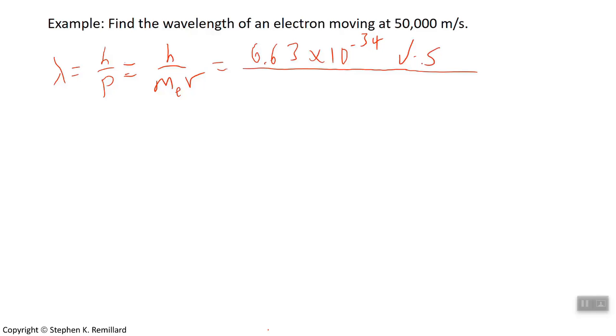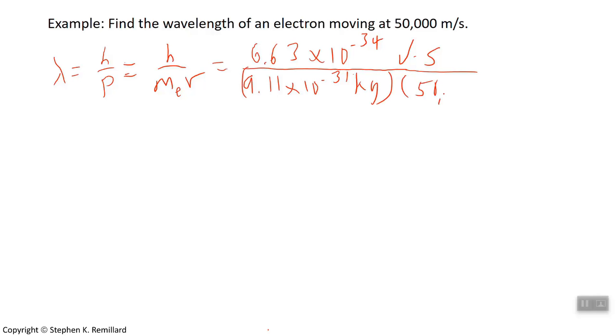6.63 × 10⁻³⁴ joule second. That's one manifestation of Planck's constant. And divide by the mass of the electron, 9.11 × 10⁻³¹ kilograms. And the velocity we're just given of 50,000 meters per second. And that evaluates out to 14.6 nanometers.